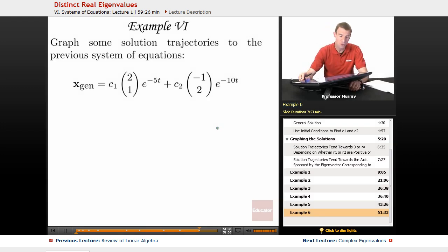We're going to graph some solution trajectories to the previous system of equations. So this is the general solution that we figured out in the previous system. If you're not sure where this comes from, go back and re-watch example 5.